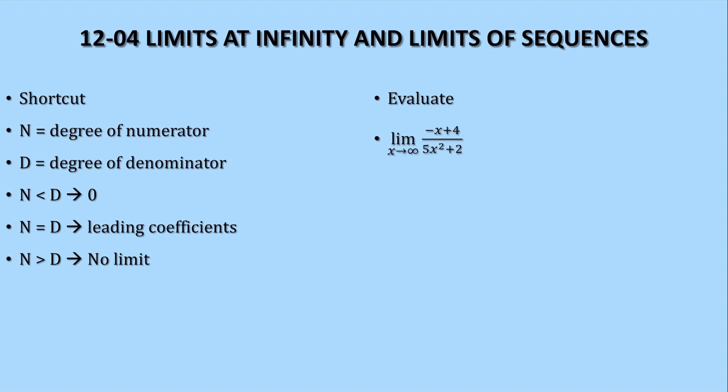So let's look at this one. The degree of the numerator, it's right there. It's not written, so we'll assume it's a 1. The degree of the denominator is 2. So N is less than D. When N is less than D, the limit equals 0.